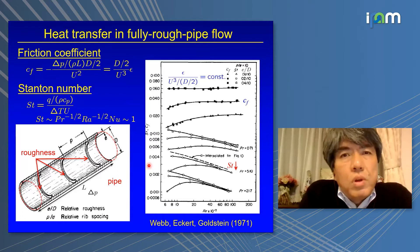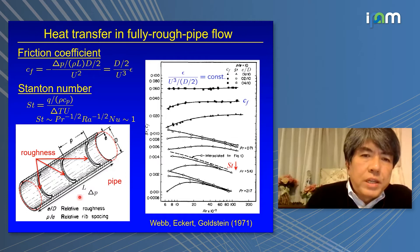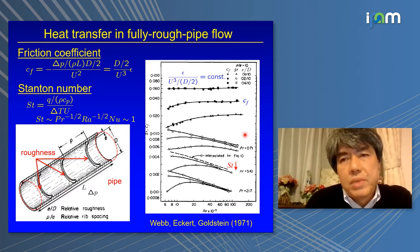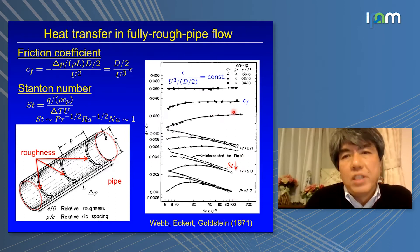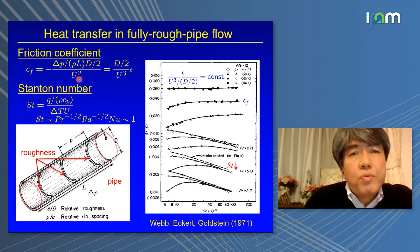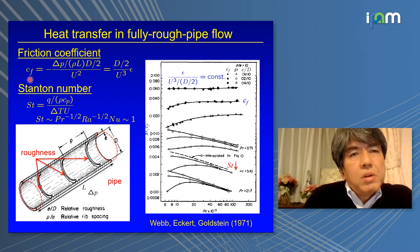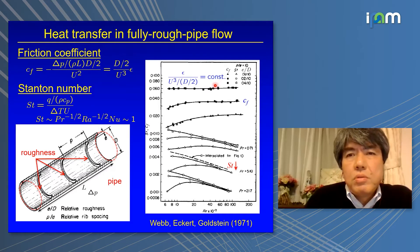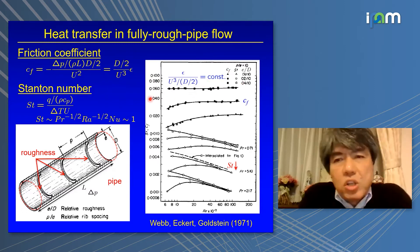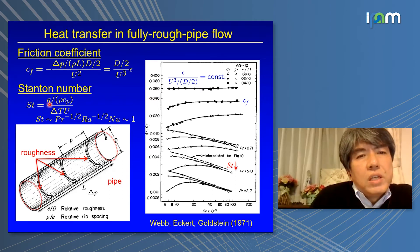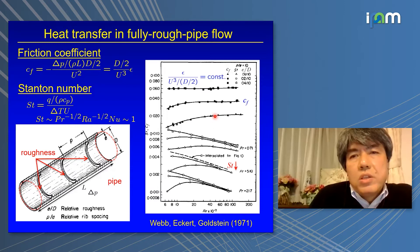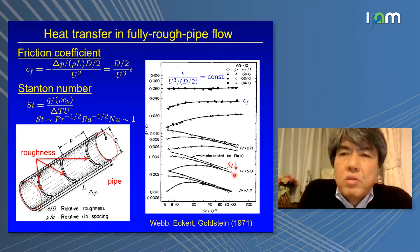What about fully rough pipe flow? At high Reynolds number, we see constant CF in the fully rough regime. The energy budget equation relates energy dissipation rate with pressure drop and CF. So constant CF implies Taylor's dissipation law. For ultimate scaling, the Stanton number should also be constant. However, in rough pipe flow, while CF is constant, Stanton decreases with increasing Reynolds number — so we cannot see ultimate scaling.